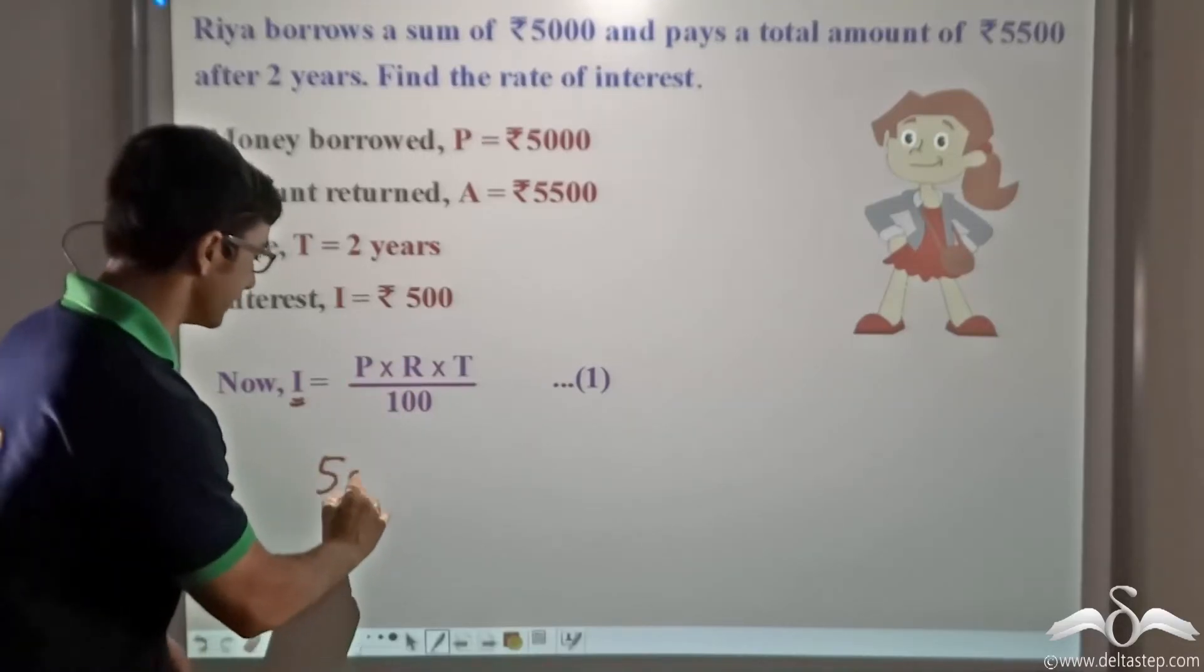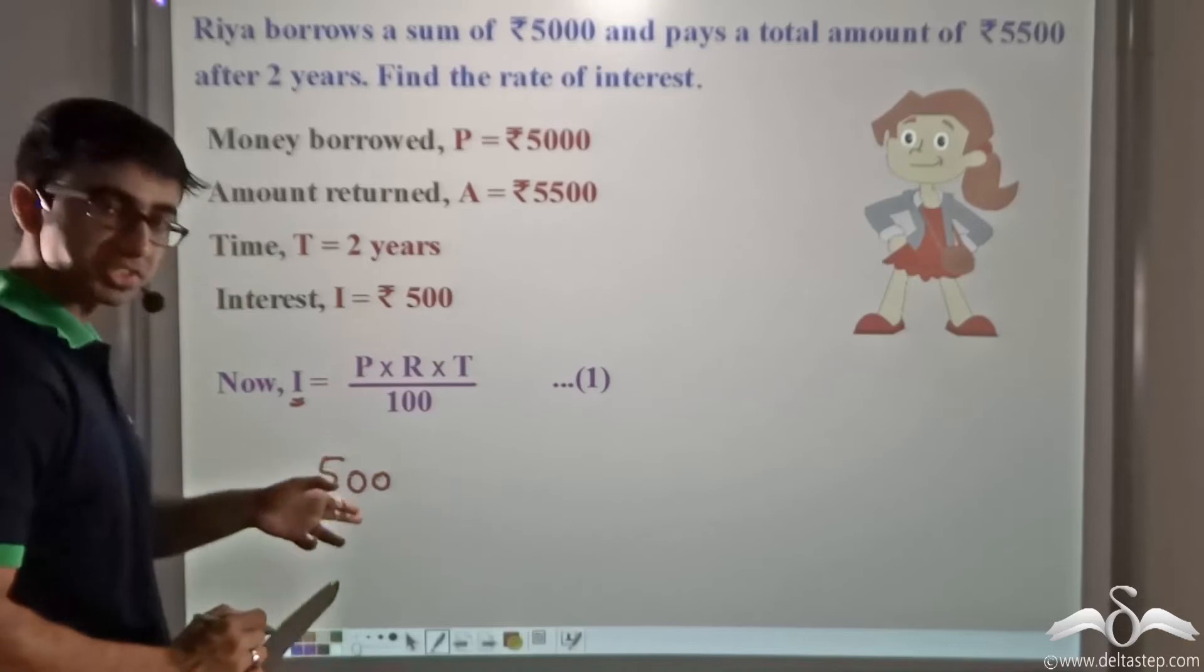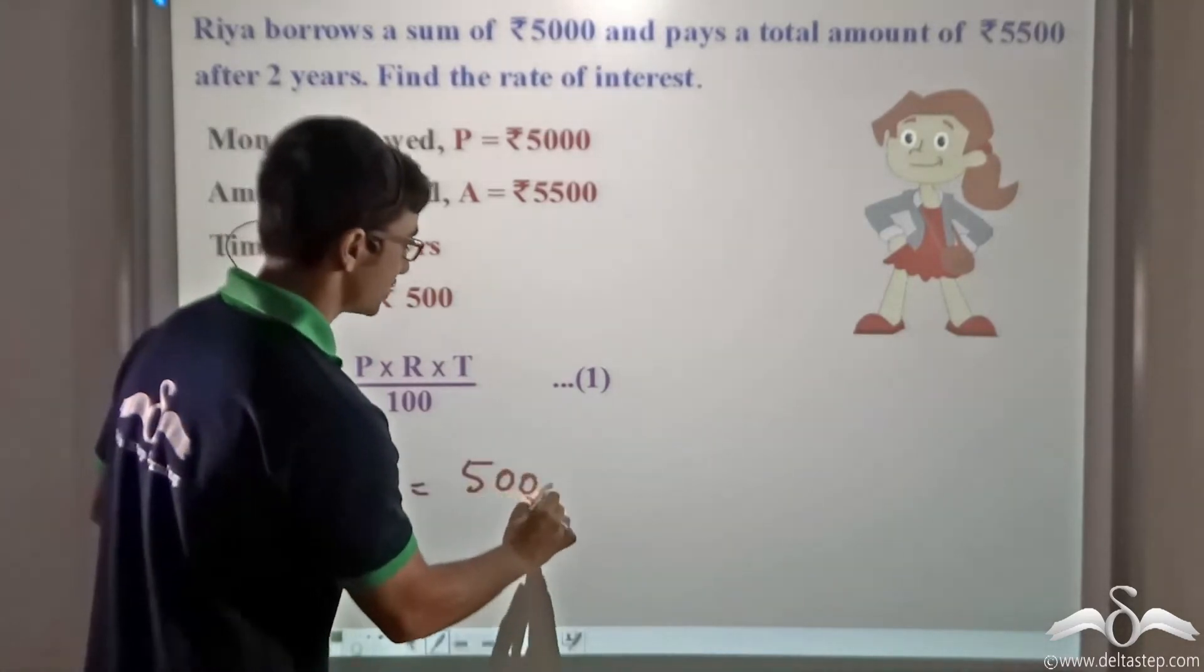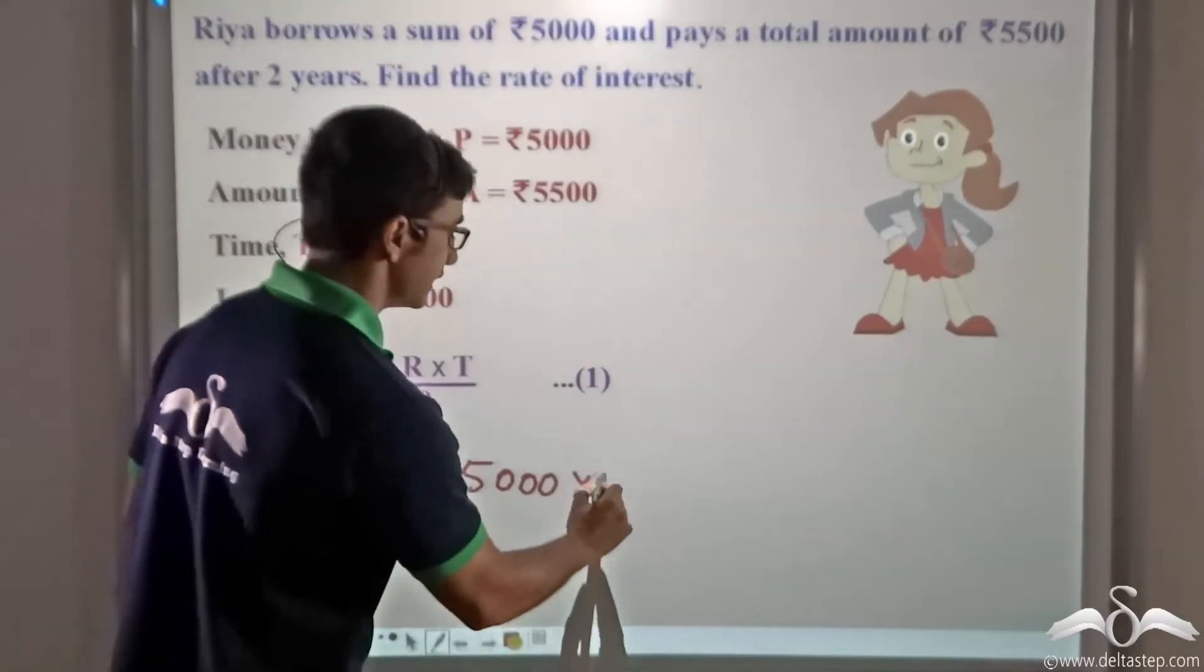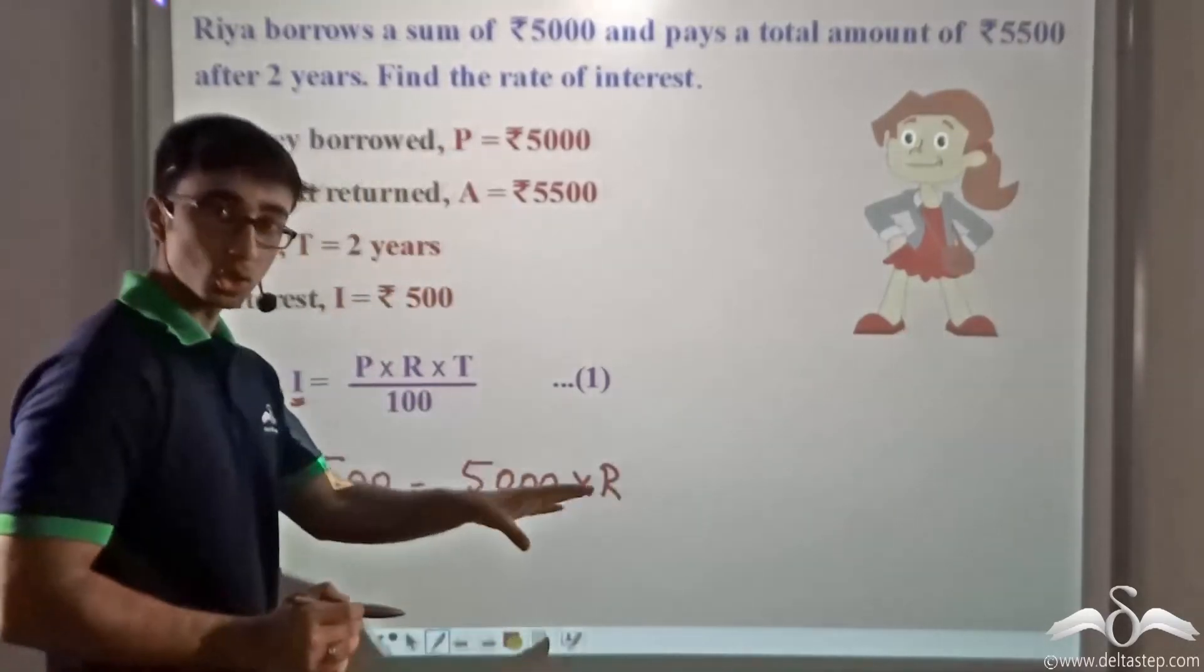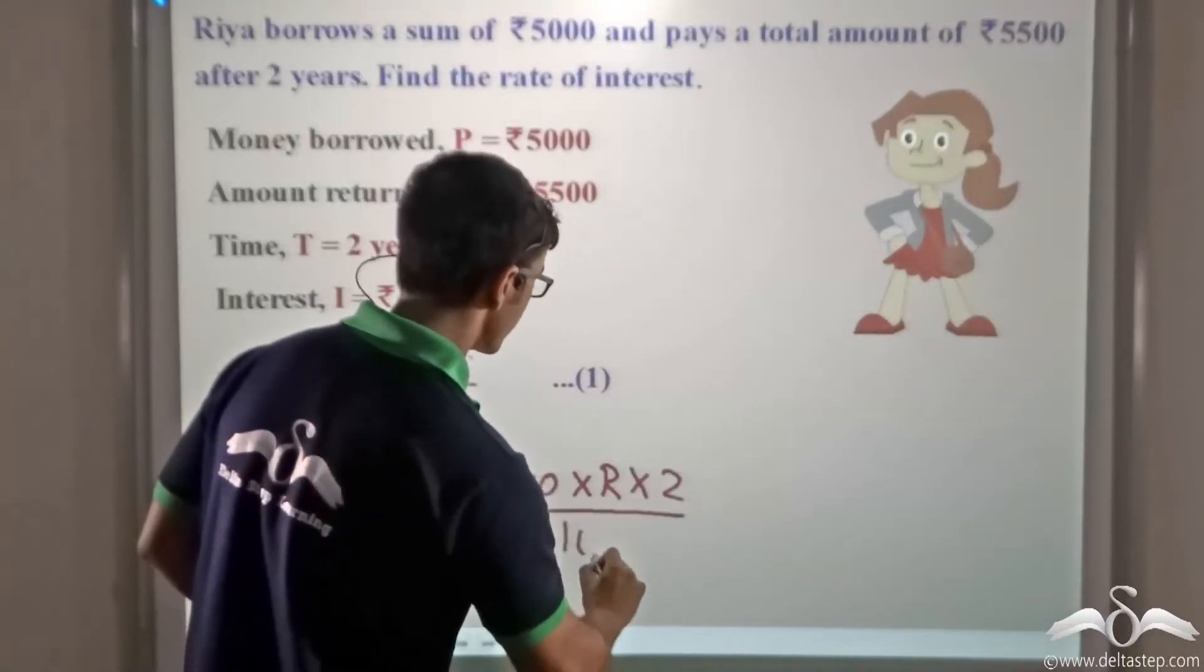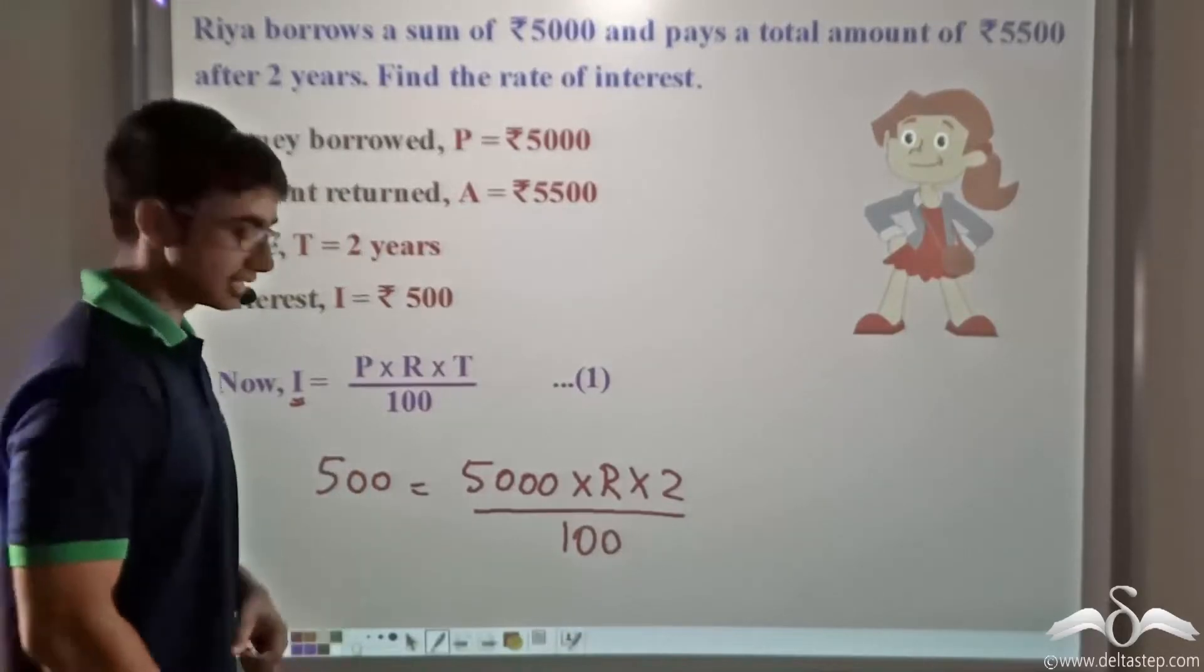So substituting the value of I, I get Rs. 500 equal to, I substitute the value for P, that is 5000, into R—R is still unknown to us—into T, that is 2 years. So this is the equation that I get.